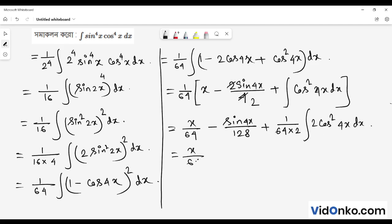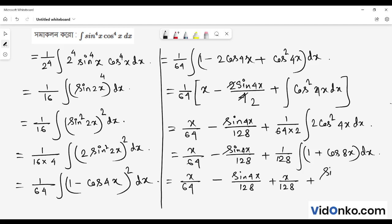This equals x by 64 minus sin 4x by 128 plus integration of 2 cos square 4x, using 1 plus cos 8x.